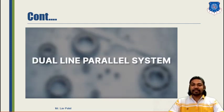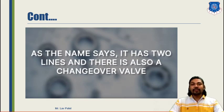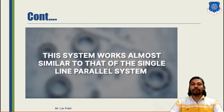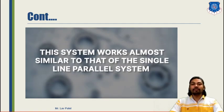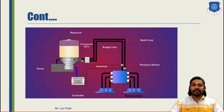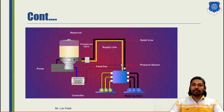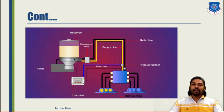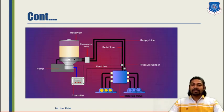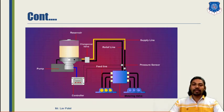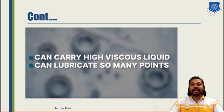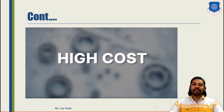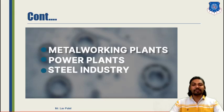The single line system can be used in construction as well as cement industries. Now, the dual line parallel system — as the name suggests — has two lines from one pump, and can be easily operated with one unit. It is a parallel kind of system. Here you can see two different lines provided via the reservoir to the metering pump. The first line is activated with the help of a valve and controller. After completing lubrication of the first line, the second line is activated via a changeover valve. This method can carry high-viscous liquid and transport it to many points. It is higher in cost and can be used in metal working plants, power plants, and steel industries.